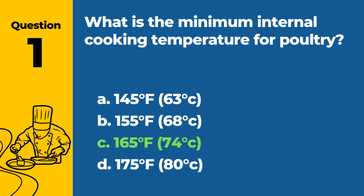Answer: c. 165°F, 74°C. The minimum internal cooking temperature for poultry is 165°F, 74°C, to ensure harmful bacteria are killed.